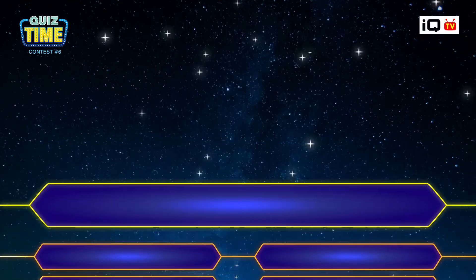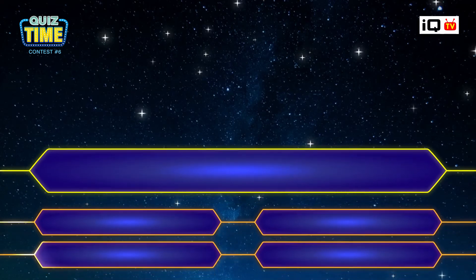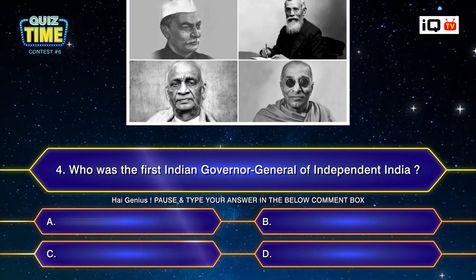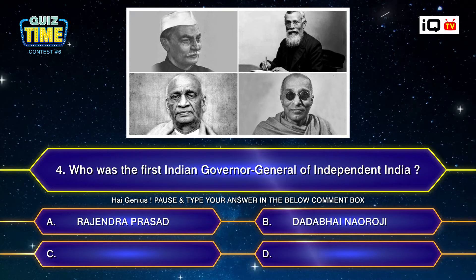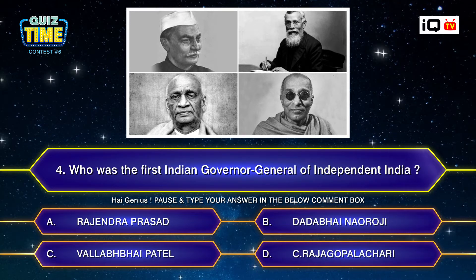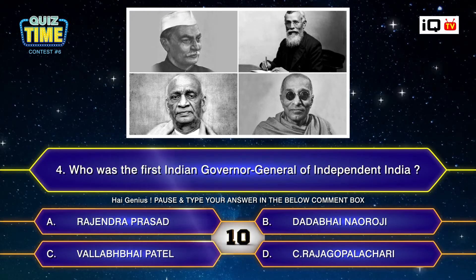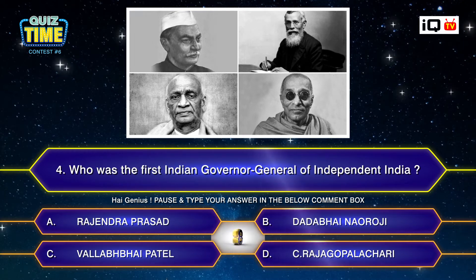Number four: Who was the first Governor General of independent India? A. Rajendra Prasad, B. Dadabhai Naoroji, C. Vallabhbhai Patel, D. C. Rajagopalachari. Your time starts now. Type your answer down.